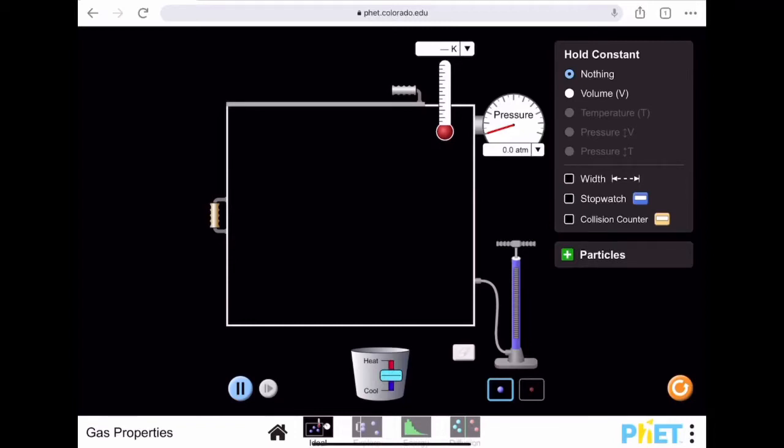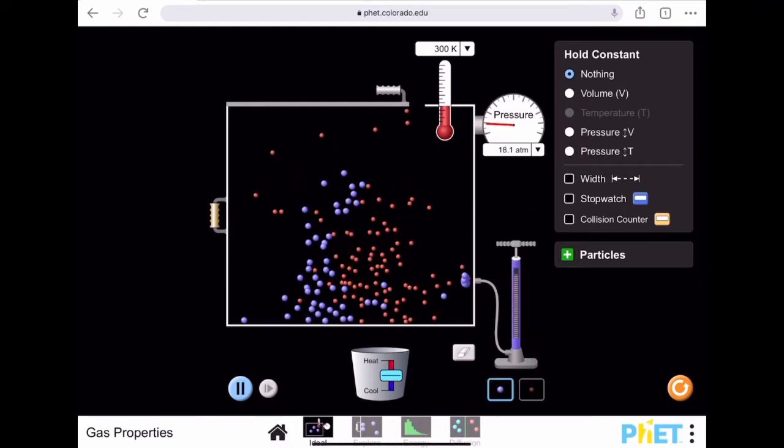Gases move between two containers or out of a container when there's a small hole, and if you have a mixture of gases they move differently. Here's some of each of these gases. We'll do two pumps of each gas.